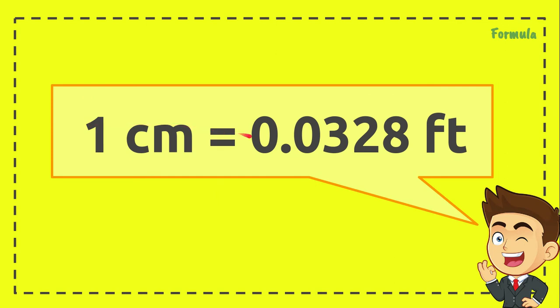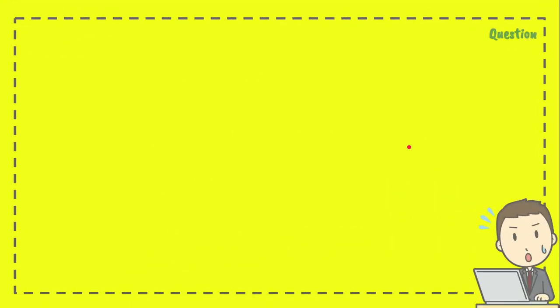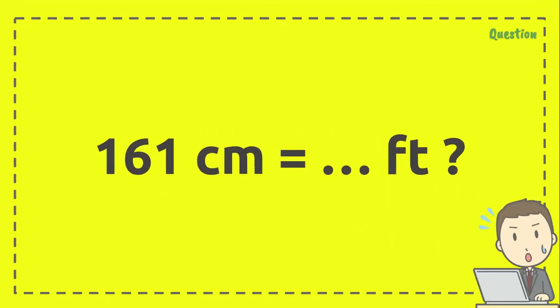1 centimeter equals 0.0328 feet. And this is the question again: 161 centimeters equals how many feet?